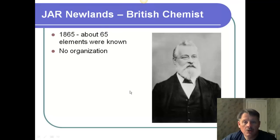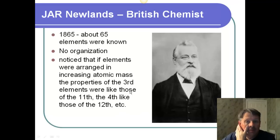There's another guy named J.R. Newlands. And back in 1865, they knew about 65 elements. Today, we know about twice as many. There was no organization at all. There was no periodic table. So, they were trying to figure out how to organize it. And he noticed that if elements were arranged in order of increasing atomic mass, let me stop right there, increasing atomic mass, they did not know about protons, neutrons, and electrons yet. So, as a result, they could only go by the mass of the different atoms that they found.